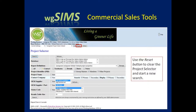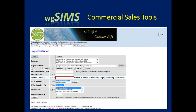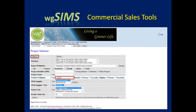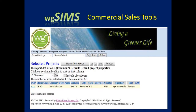When doing multiple searches, it's good to hit the Reset button to clear the Project Selector and start a new search. In this next example, we'll use the company name to search for a project. We'll enter 'Joe%'. The percent sign is a wildcard, allowing you to search for any characters after or before it. For example, 'Joe%' will find Joe's Joint and Joe's Bar and Grill. Here we entered 'Joe%' and clicked Search, pulling up PID 622, or Joe's Joint.